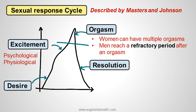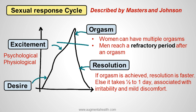Orgasm is experienced in different ways in males and females. Women can have multiple orgasms, whereas men reach a refractory period after an orgasm. Talking about resolution, if someone achieves orgasm the resolution is fast. If they are not able to achieve orgasm, the resolution is typically slower and delayed.